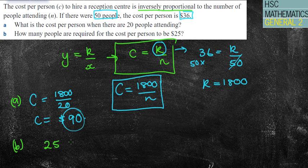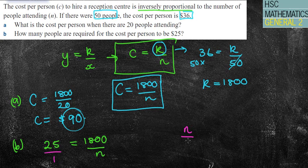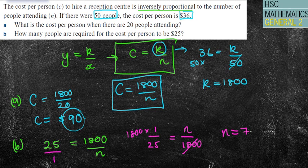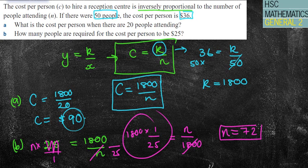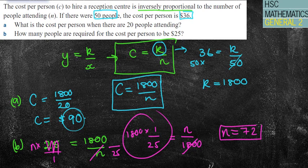Part B says how many people are required for the cost to be $25. I'll put 25 for C: 25 equals 1800 divided by n. I could flip this to make n over 1800 equals 1 over 25, then times by 1800 to get my answer. 1800 times 1 over 25 gives n equals 72 people. Or I could times by n and divide by 25, which is exactly the same. Either way, n equals 72 people.